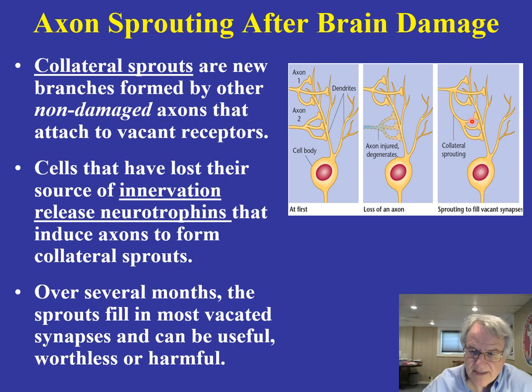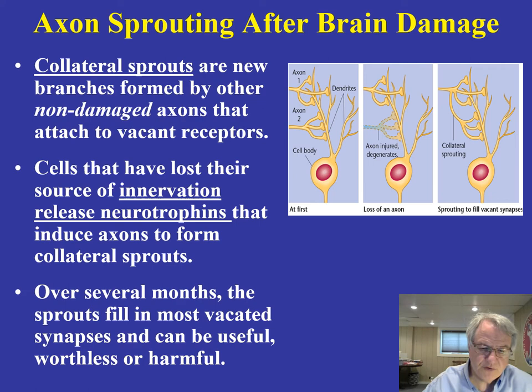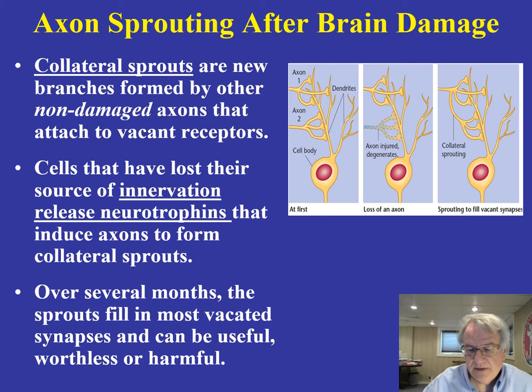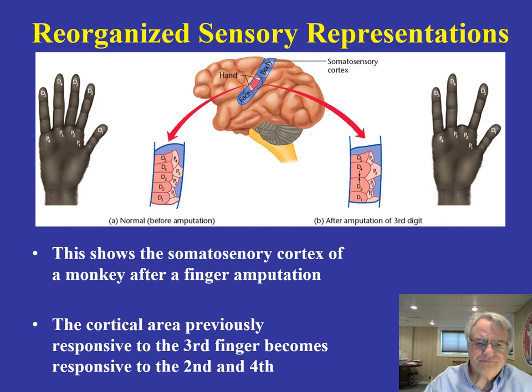This collateral sprouting — where you're getting a sprout coming off of another axon — can fill vacant synapses, actually replacing the degenerated connections. Over a several-month period of time, those sprouts can fill in vacated synapses, and they can be useful in terms of repair that takes place in the brain.